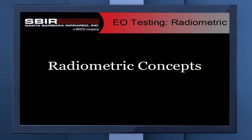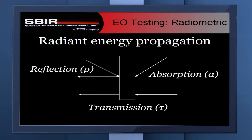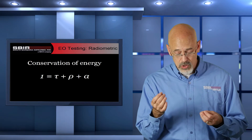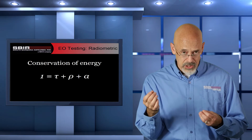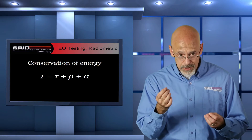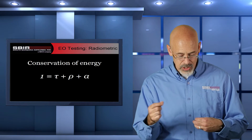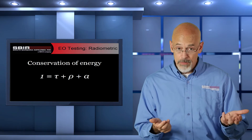Some key concepts in radiometry. The first is radiant energy propagation. There are three ways that radiant energy gets propagated: reflection off of an object, absorption by an object, and transmission through an object. Because of the law of conservation of energy, those three components add up to one. Typically, reflectance is rho, absorption is alpha, and transmission is tau — those three sum to one.